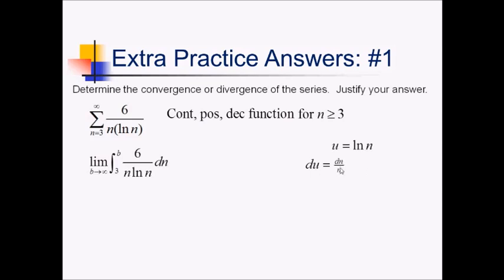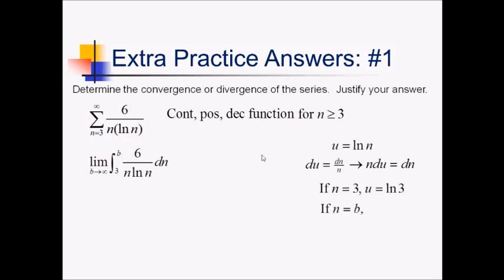So du is going to be 1 over n dn. So then dn itself, if I isolate that, is going to be n·du. I have to do that so that I can replace the dn with a du. We also need limits of integration. If my n value is 3, then my u value is ln(3). And if I have an n value of b, then I can write u equals ln(b).